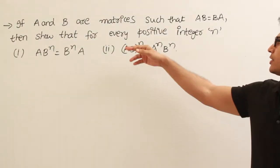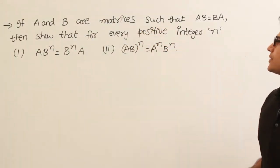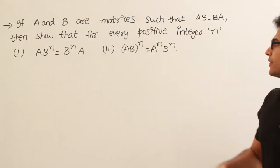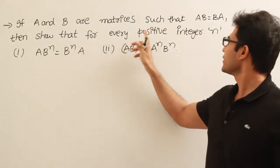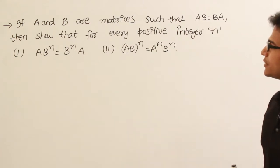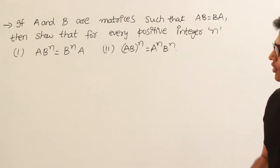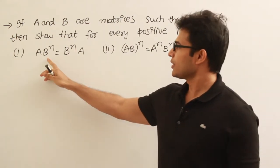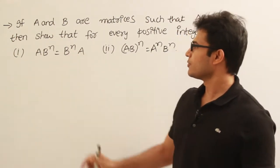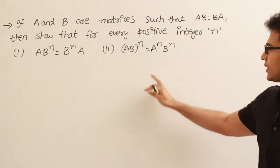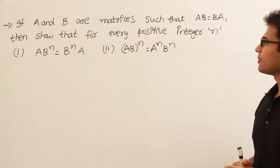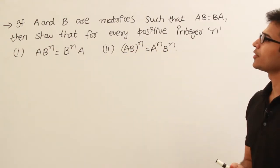If A and B are matrices such that AB equals BA, then show that for every positive integer n, A into B power n should be equal to B into A power n, and AB power n equal to A power n B power n.